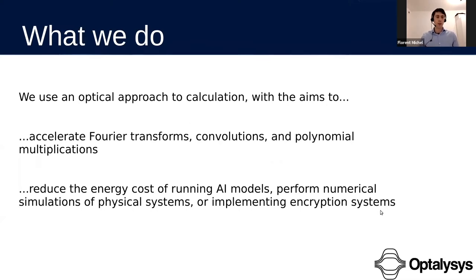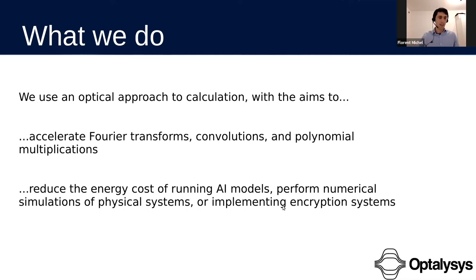To say a few words about what we do: we use an optical approach to computation with two related aims. The first is to accelerate the calculation of Fourier transforms as well as all Fourier-based computations — such as convolutions, which occur a lot in artificial intelligence — and polynomial multiplications, which occur a lot in lattice-based cryptography. The second aim is to reduce the energy cost of computing Fourier transforms, and therefore reduce the cost of running AI models, numerical simulations using spectral methods, or implementing encryption schemes.